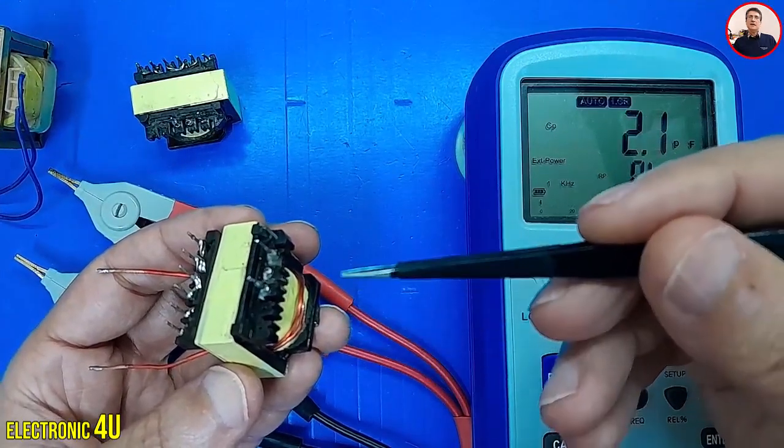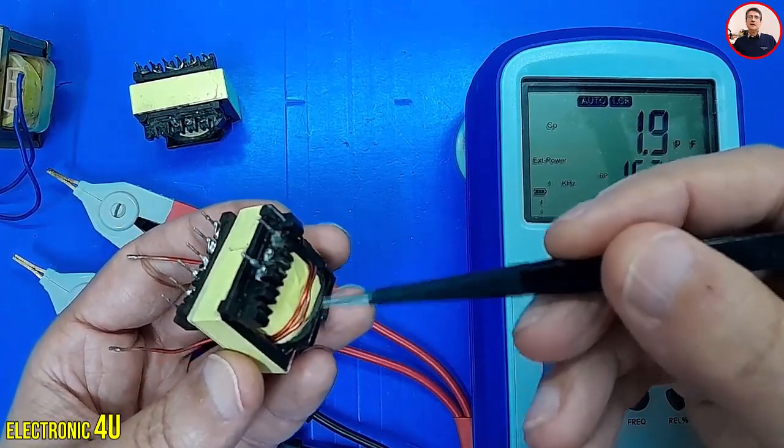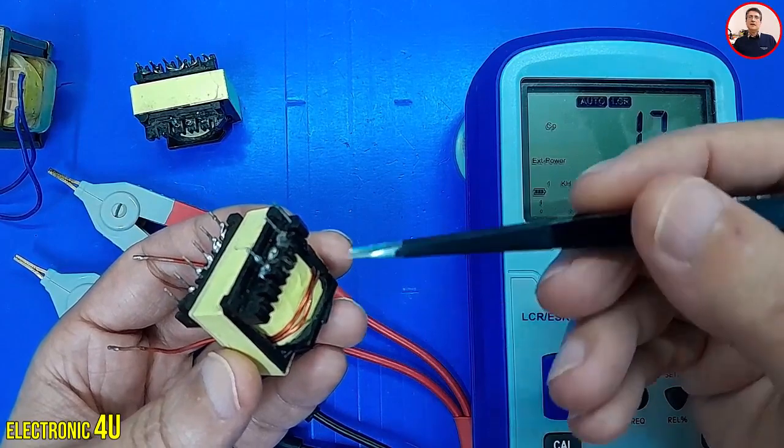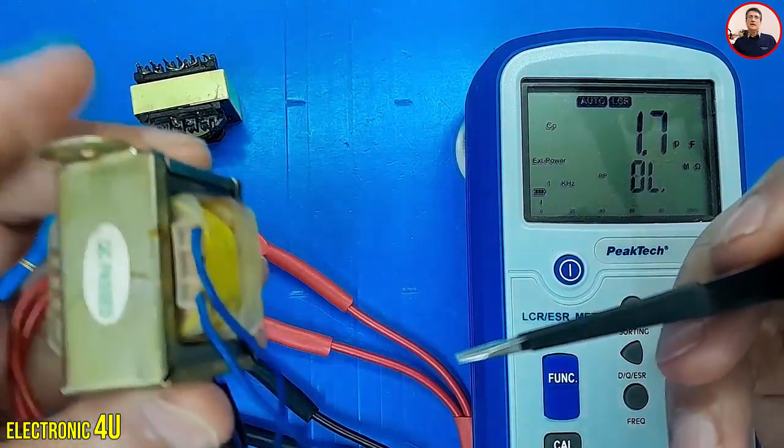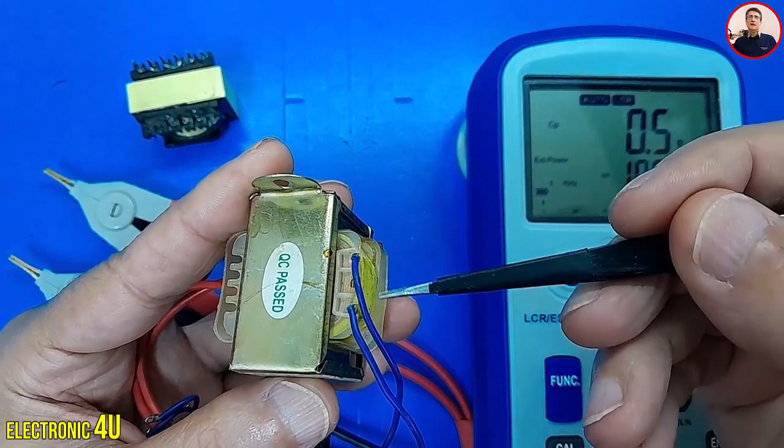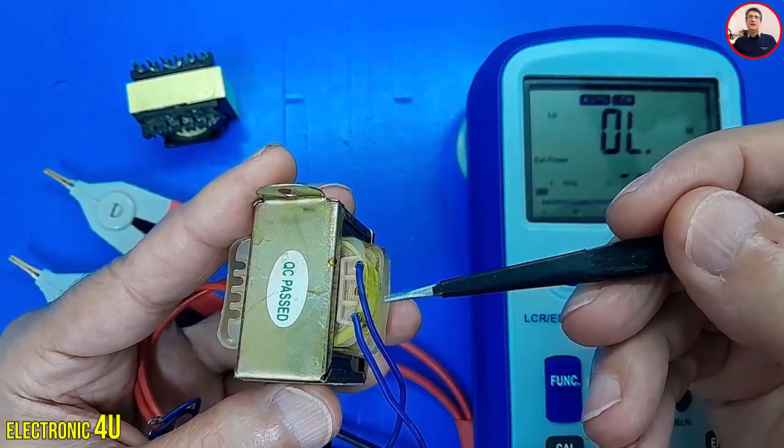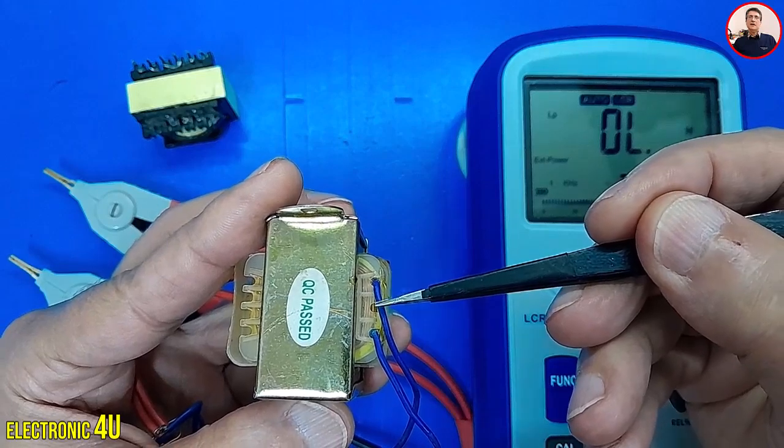We know that in switching transformers, the number of turns in the primary coil is small, like two turns or five turns. But in iron transformers, the number of turns of the primary winding is much more. This part is completely the primary winding.